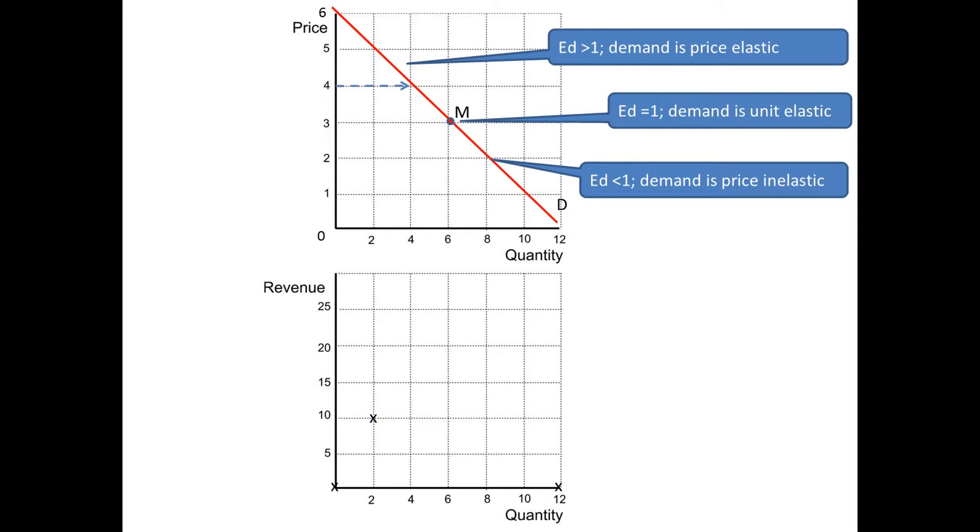Drop the price again to $4, and we see that we have 16 revenue. 4 times 4 is 16. Drop the price to 3, 3 times 6 is 18. Mark that off with an X. Down to $2, we have 2 times 8 is 16. The revenue has now fallen when we get to the right of point M. Mark that with an X.